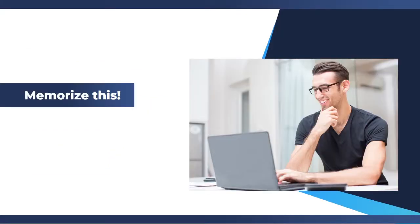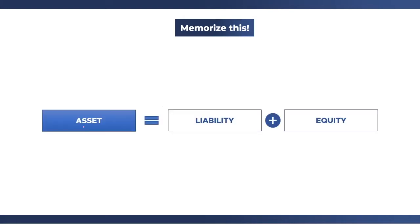I would like you to get your brains ready because you'll need to memorize the next concepts we will be discussing, as we are now going to familiarize ourselves with the accounting equation. The accounting equation goes like this: the total of your assets or resources is always equal to your liabilities plus equity — or A equals L plus E. This is the accounting equation.